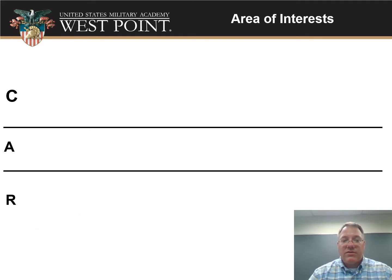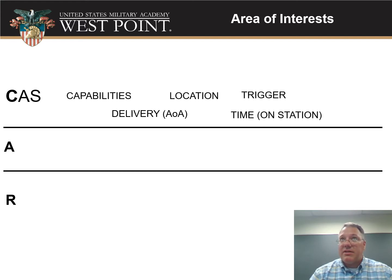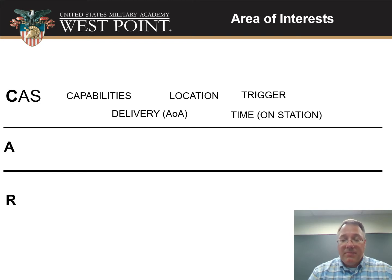To consider the area of interest, we've got three steps — CAR. First is CAS, close air support. Things you want to think about: What are the enemy's capabilities for air? Where are they located? What triggers might the enemy have for releasing those air assets? How are they going to deliver it to you? Where are their avenues of approach? How much time do they have on station? If they've got helicopters that have to fly from a long distance, they might not have a lot of fuel for loitering around in your area, or they might be nearby and could spend your entire mission time in your AO.